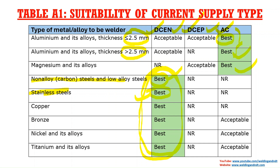This is sometimes asked in interviews: the difference between SMAW, GMAW, and GTAW from a polarity point of view. In SMAW and GMAW, the common practice is using DCEP — direct current electrode positive — whereas in TIG welding or GTAW, the common practice is using DCEN — direct current electrode negative polarity.